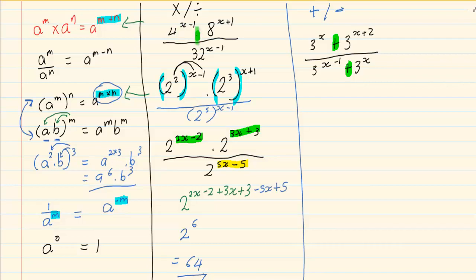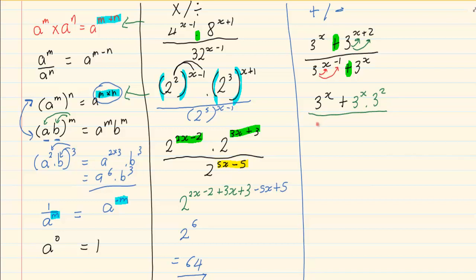When doing this type of sum, check that it is already in prime numbers — here it is already base 3. What we do is separate the powers: 3 to the power of x stays the same, and 3 to the power of (x plus 2) becomes 3 to the power of x times 3 to the power of 2. In the denominator, 3 to the power of (x minus 1) becomes 3 to the power of x times 3 to the power of minus 1, plus 3 to the power of x.